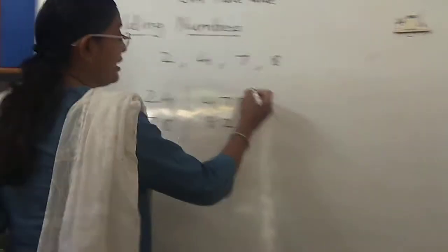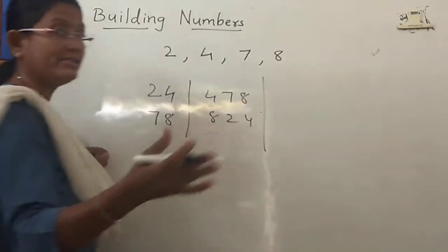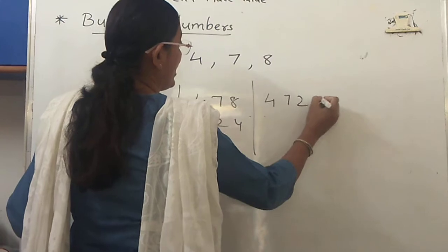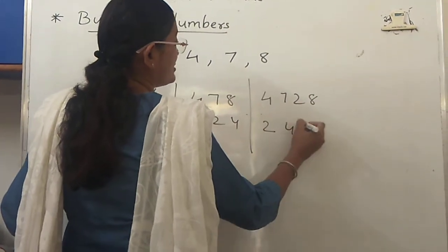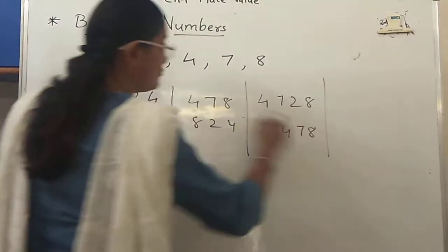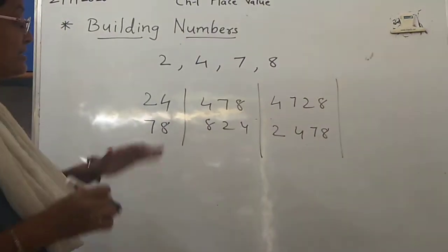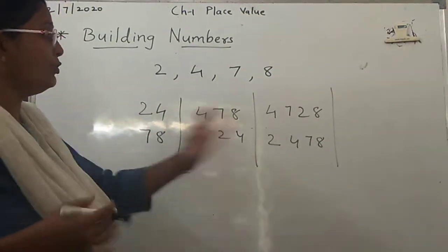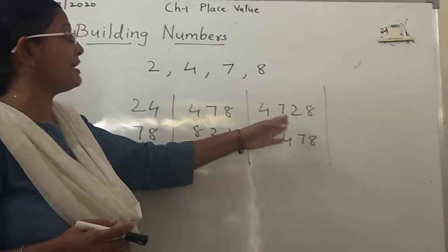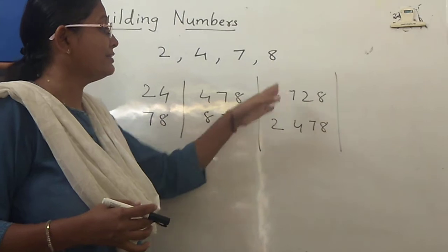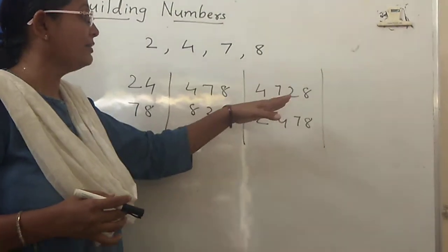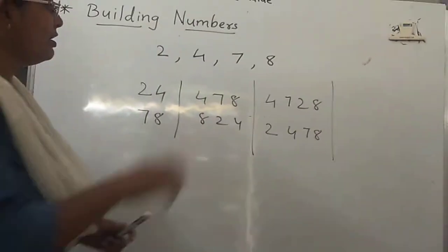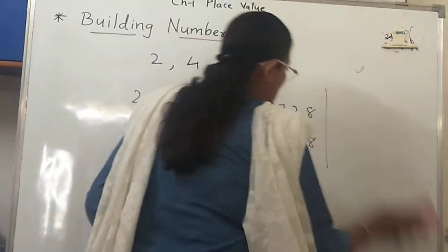If I want to build a 4-digit number, then I can build 4728, 2478, right? This is a 4-digit number. Now these are random numbers which I have written. You can make any number from this — either 7428, 7248, or 8274 — any number you can make. This is called building numbers.